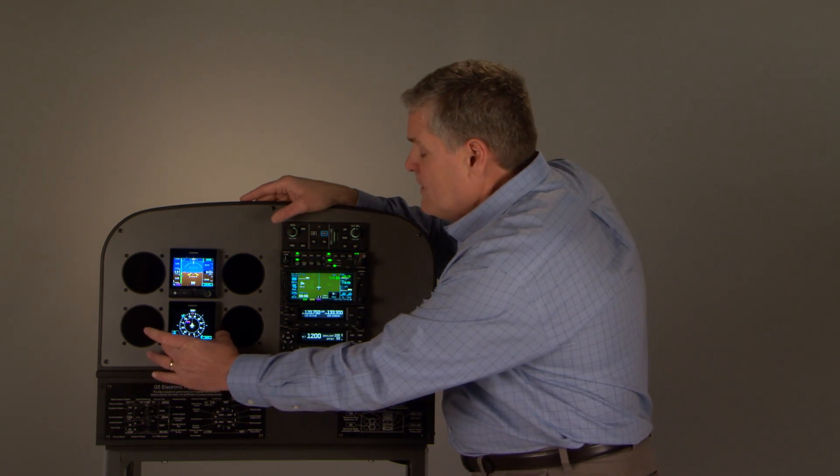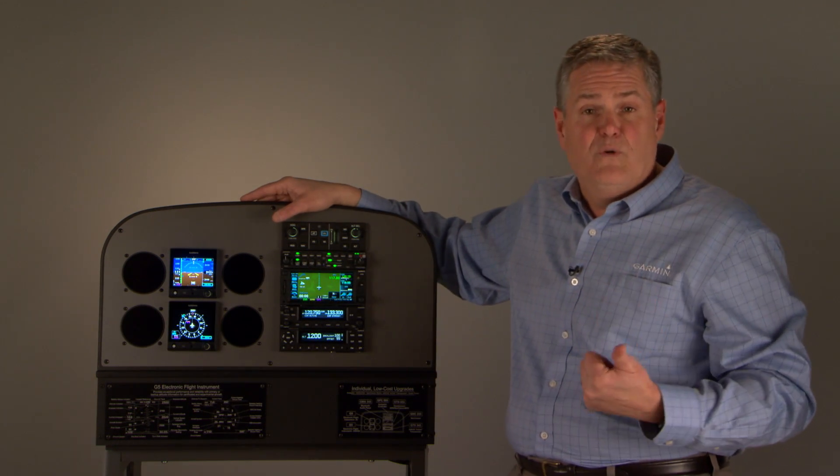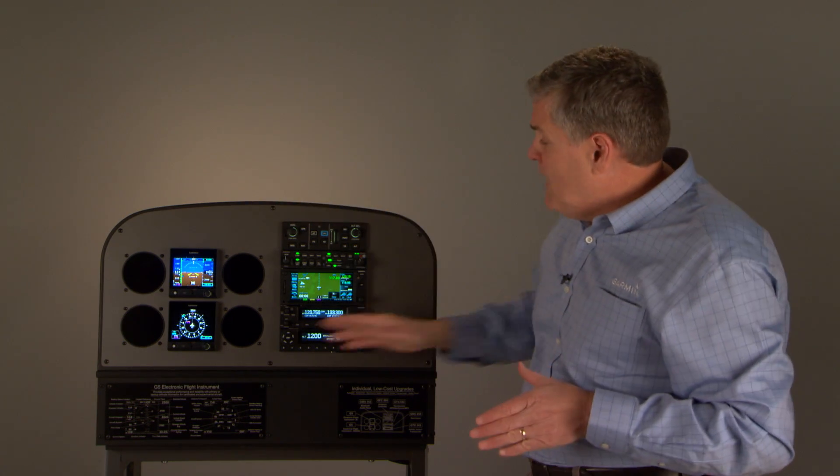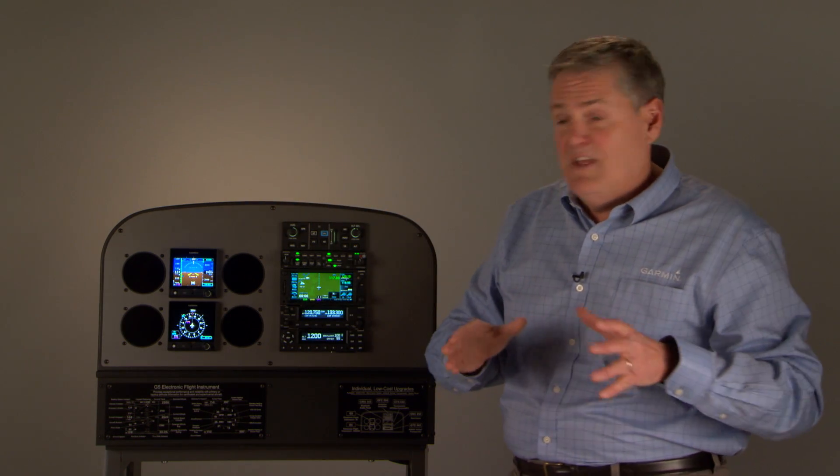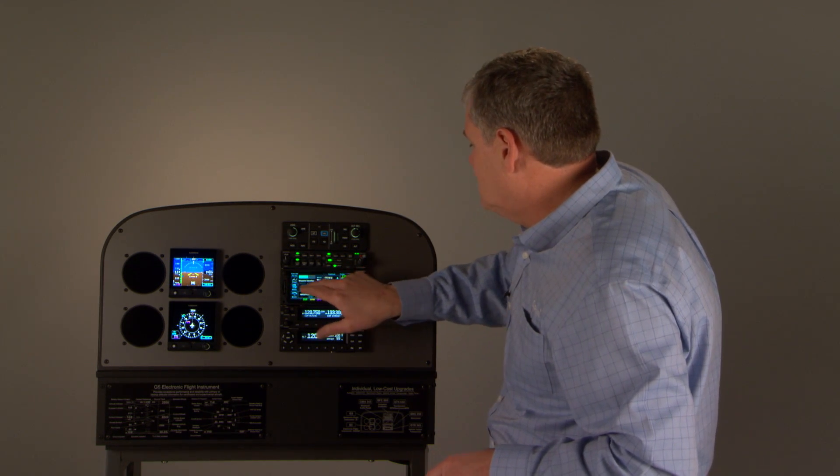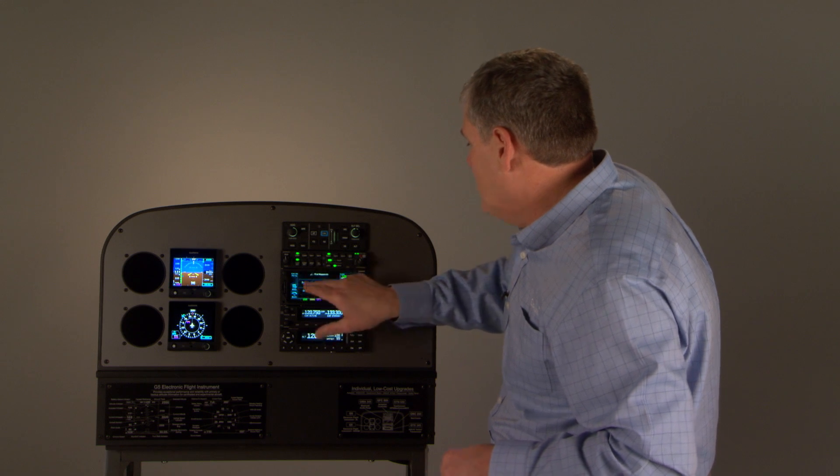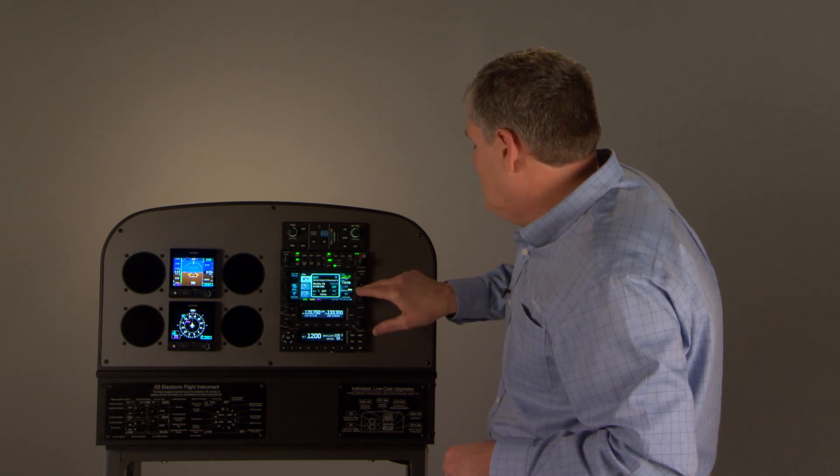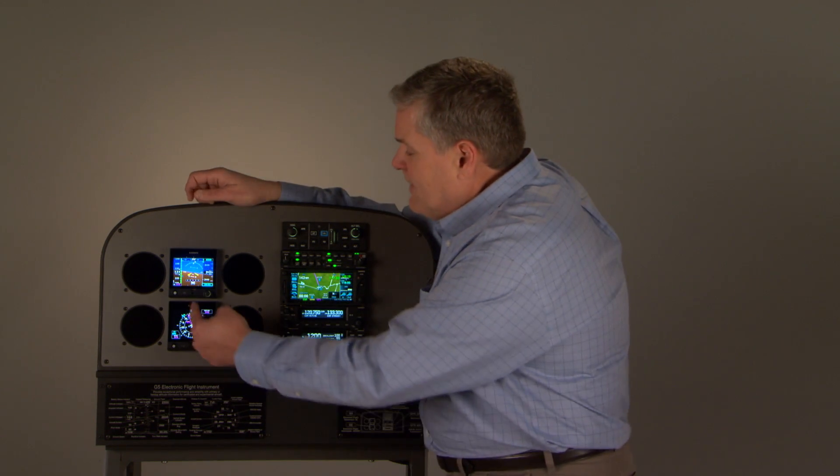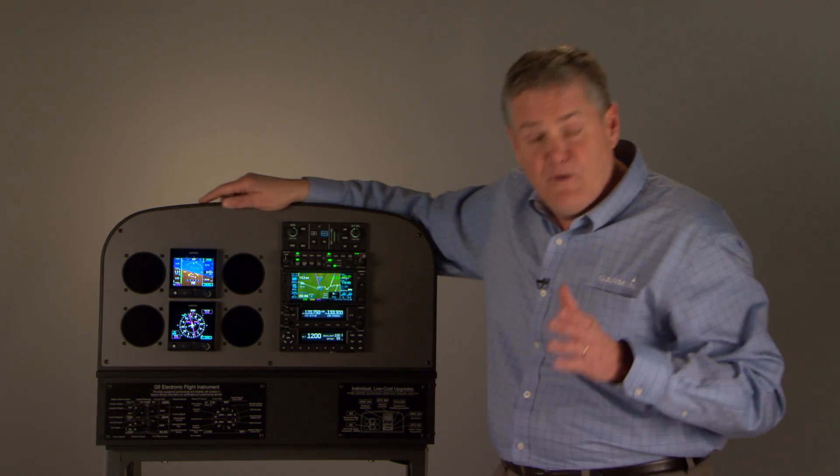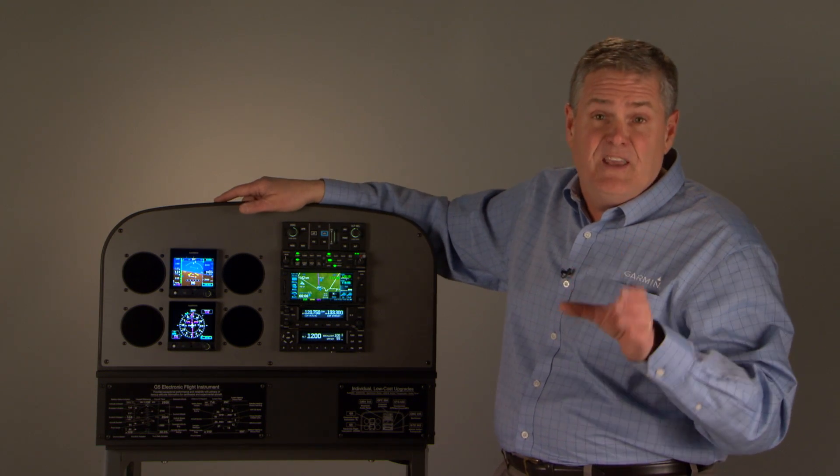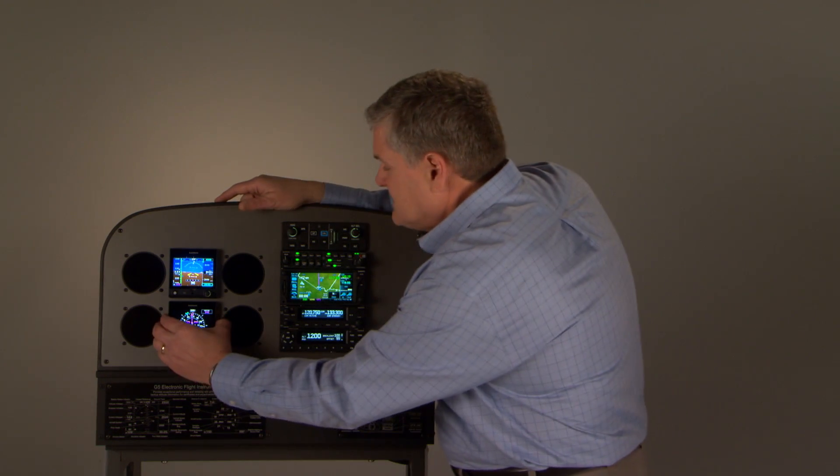That's if you do not have it interfaced with a Garmin GNS 430, 530, GTN 750, or 650. If you do, this now becomes a full-fledged HSI unit. So let me go ahead and put a trip in here. Let's go direct somewhere here. We can go direct down to Wichita, Kansas. That sounds like a fun place to go. Now I've got an HSI needle. If you have not flown with an HSI, you want to. It's basically putting your CDI and OBS inside your compass. If you're flying IFR, it makes life a whole lot easier.